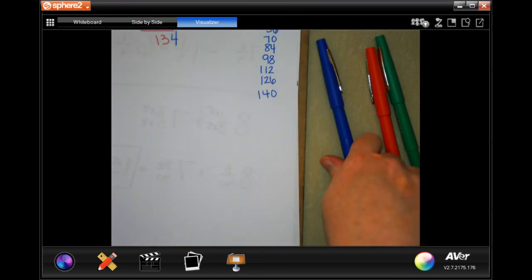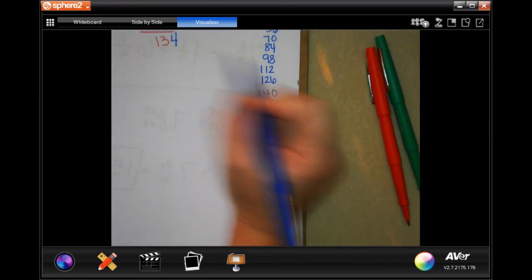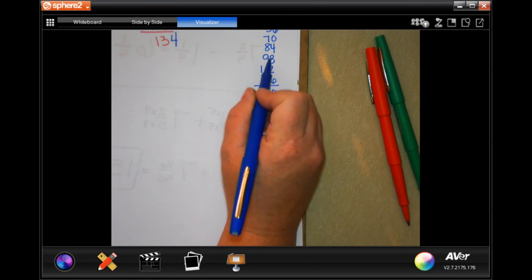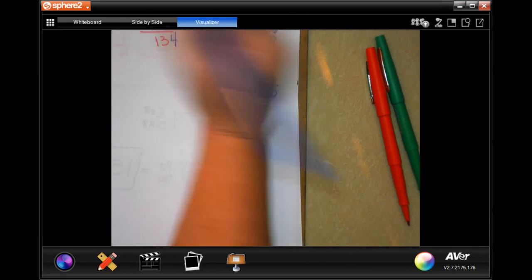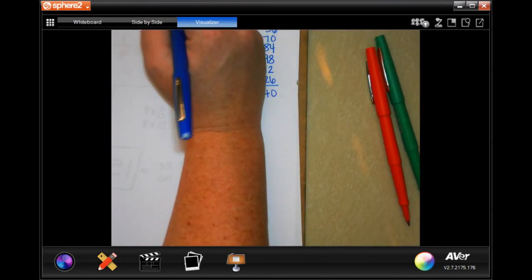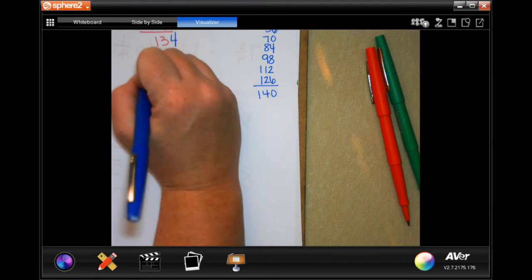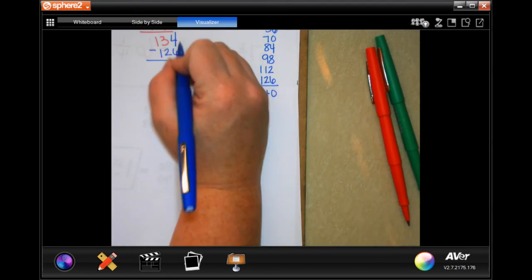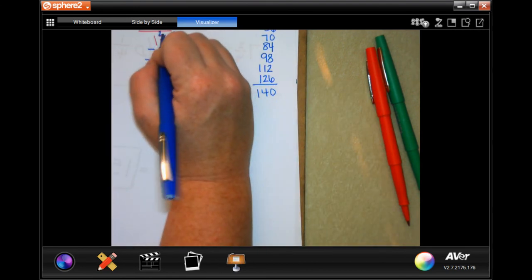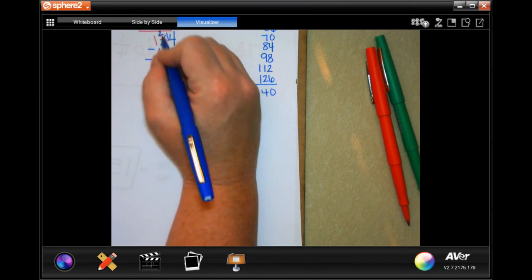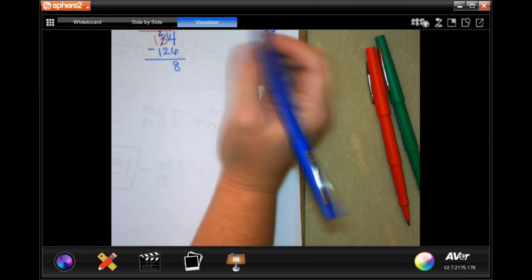So now I'm going to go 134. It looks like the closest I'm going to get is 126, which is 1, 2, 3, 4, 5, 6, 7, 8, 9 times. 9 times 14 was 126. 4 can't take away 6. I'm going to borrow one. Making it 14. 14 take away 6 is 8. 2 take away 2 and 1 take away 1 and 0.